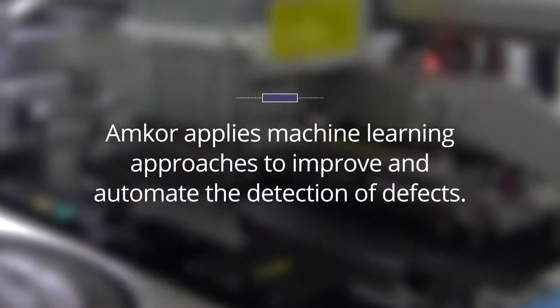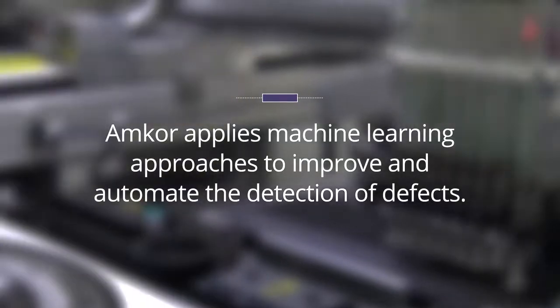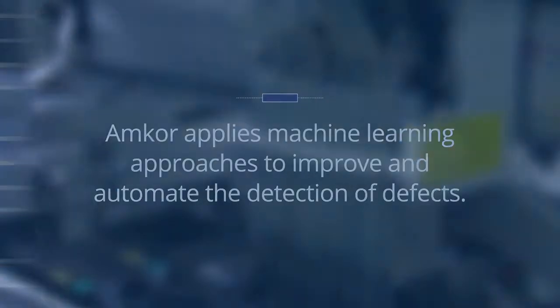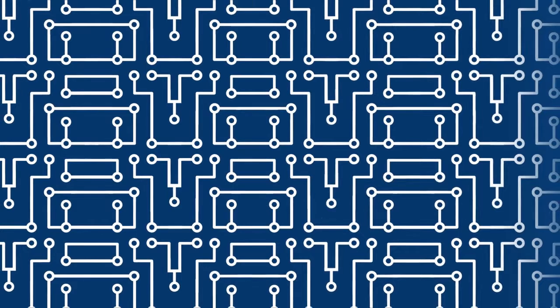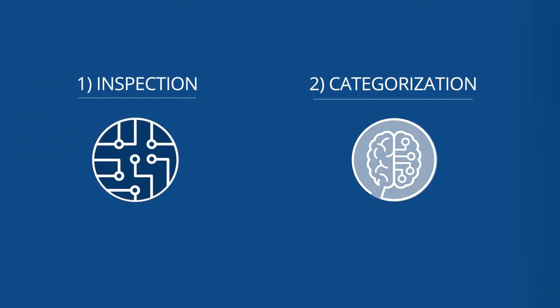Amcor applies machine learning approaches to improve and automate the detection of defects. Using an industry-leading AI platform, we automate the defect classification process in two steps.